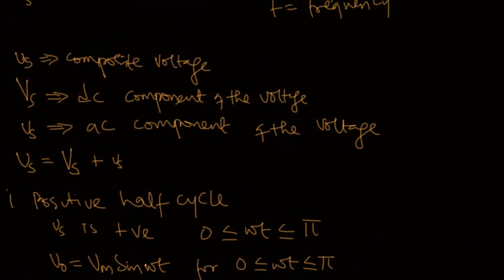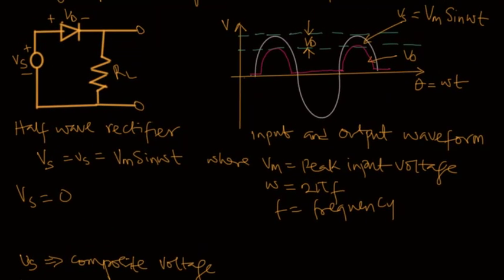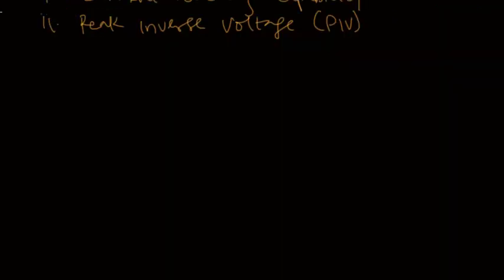The second parameter is the peak inverse voltage, referred to as PIV. The peak inverse voltage has to do with the voltage that the diode can withstand in the reverse direction — that is, the largest reverse voltage that will appear across the diode. During the negative half cycle of the half wave rectifier, the diode does not conduct, but the entire voltage Vs appears across the diode. The diode must be able to handle this peak inverse voltage. For a half wave rectifier, the peak inverse voltage equals Vm.